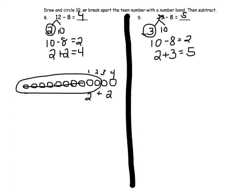In the draw and circle 10, we will draw 13 dots, 1, 2, 3, 4, 5, 6, 7, 8, 9, 10, 11, 12, 13. We will circle 10 dots and subtract the 8,